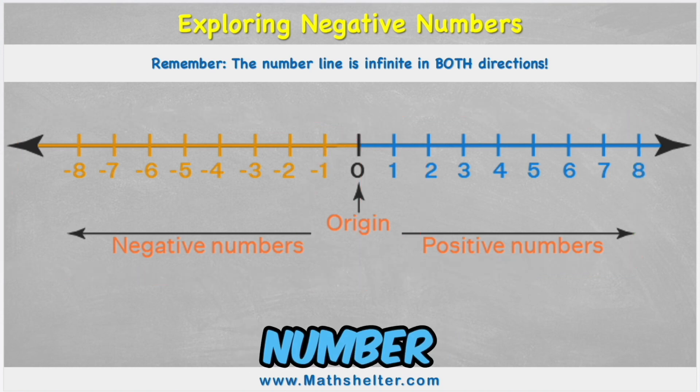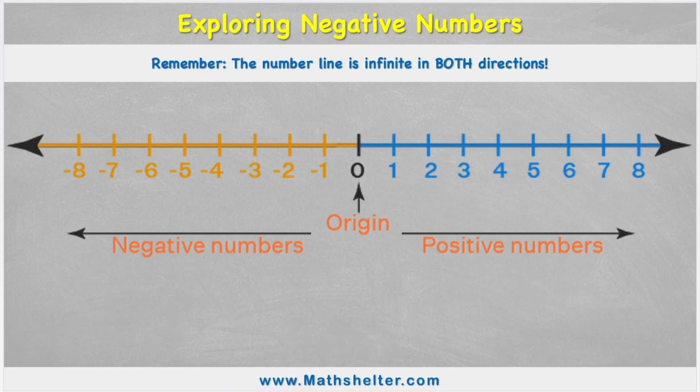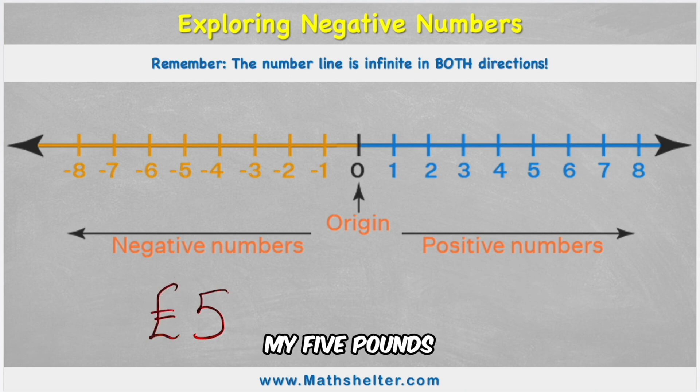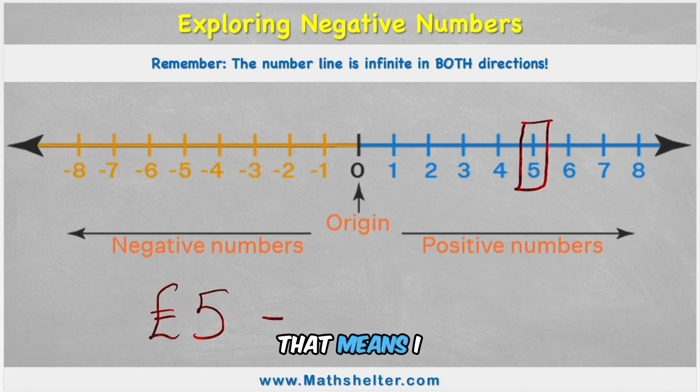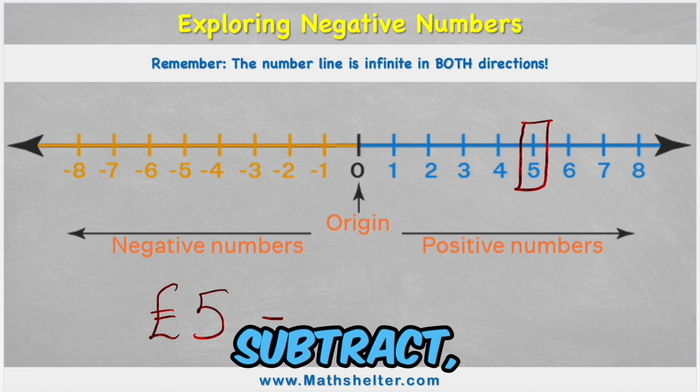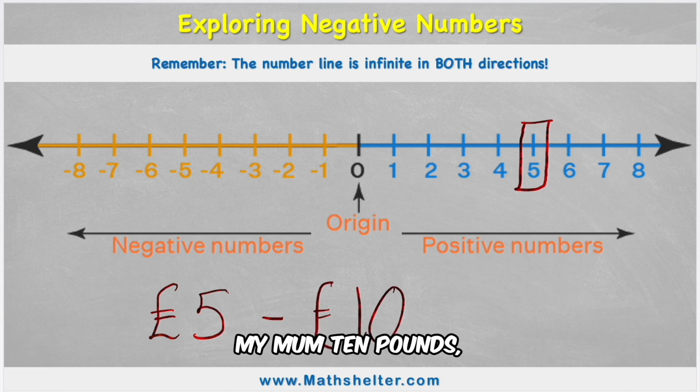So what is a negative number? And when might you see it? Well, let's imagine that I have five pounds. So I would find my five pounds on the number line. There it is. But let's say, oh no, I owe my mum 10 pounds. That means I owe her, so I'm going to have to subtract 10 pounds.